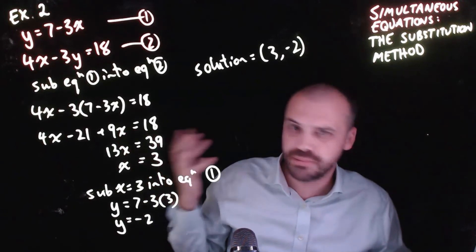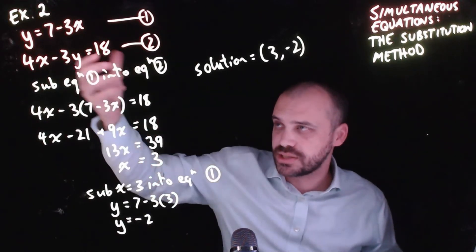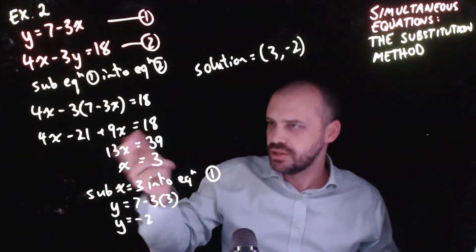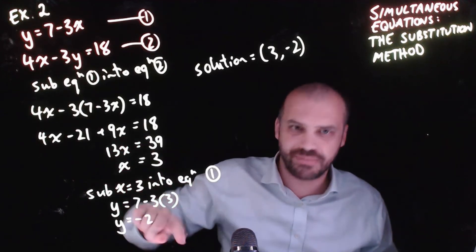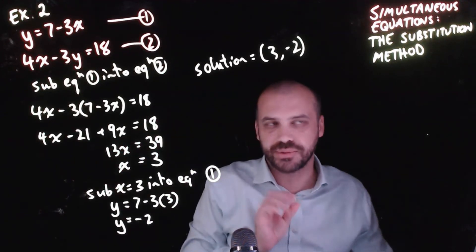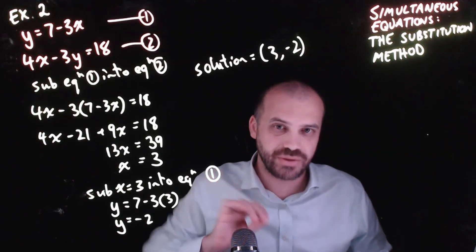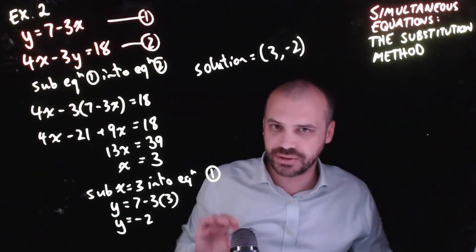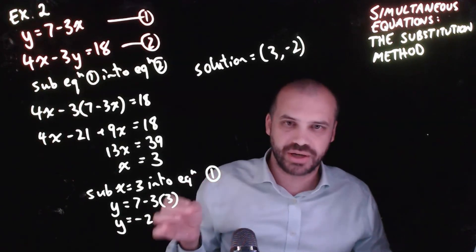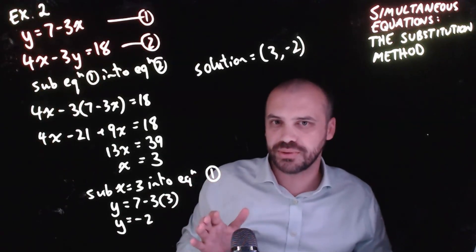I could do 100 examples here, but they all work out the same. You're subbing one equation into another, solving for one of the variables, and then subbing it back in and solving for the second variable. That's simultaneous equations using the substitution method. It is a super important skill, so you've got to practice, practice, practice if you're going to do well with these.